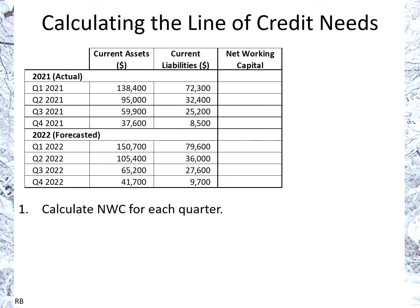Going into the first step, we're looking at calculating the net working capital for each quarter, which is simply current assets minus current liabilities. So we have 138,000 minus 72,000 — that's 66,000 — and we do the same for the rest of the quarters.